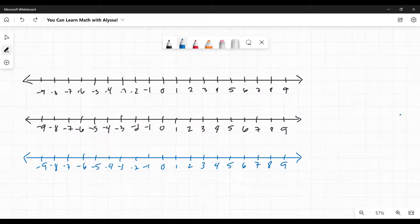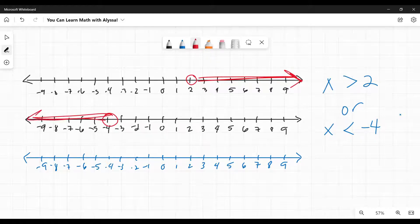The other or you might see is something like this: x is greater than 2 or x is less than negative 4. Well, if x is greater than 2, it would be an open circle at 2 going to the right. x is less than negative 4, open circle at negative 4 going to the left. So the or is any spot, any number that's on either of these. So my final answer, I would just include both of those.